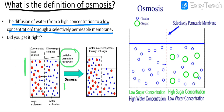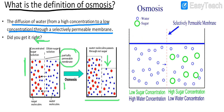So water molecules will start moving from the right side of the beaker towards the left side. As a result, the amount of solution is reduced on the right side because water molecules have moved to the left-hand side. In the next figure, green represents sugar molecules and blue represents water molecules. More water is present, so the movement is towards the right. This is what osmosis is about.